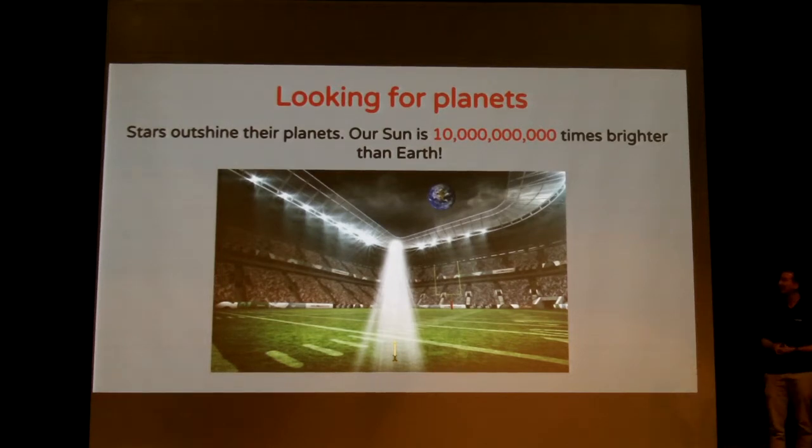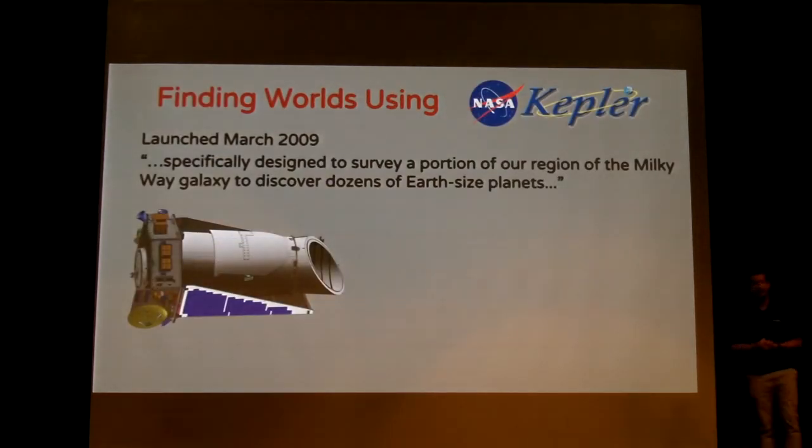But luckily, astronomers are very clever folks, and they've come up with a number of ways of detecting planets using indirect methods. So we can't directly image these worlds yet, but we can use indirect methods to infer their existence. Actually one of the best ways of doing this is to use the Kepler Space Telescope, which is your local space telescope that's operated here at NASA Ames. And it was launched back in March 2009 specifically to address this problem, to look for habitable worlds in our nearby galaxy. It was the first mission designed by NASA to specifically try to address this problem.